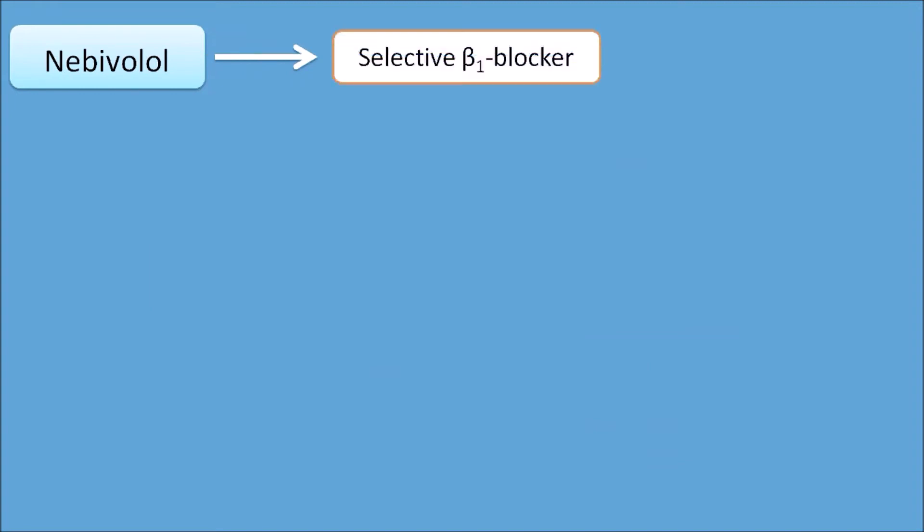Nebivolol is a selective beta-1 blocker, so it acts on the beta-1 receptors located on the heart, thereby decreasing the rate and force of contraction. Because beta-1 receptors are responsible for increasing the rate and force of contraction of the heart, Nebivolol blocking this beta-1 receptor decreases the rate as well as force of contraction.